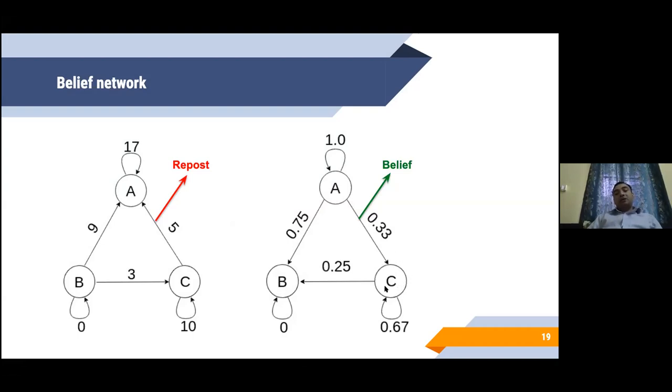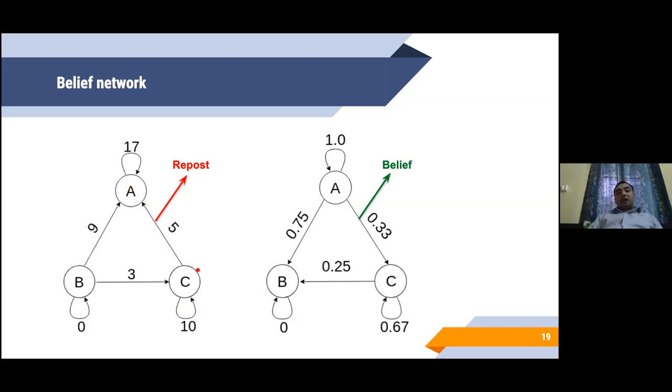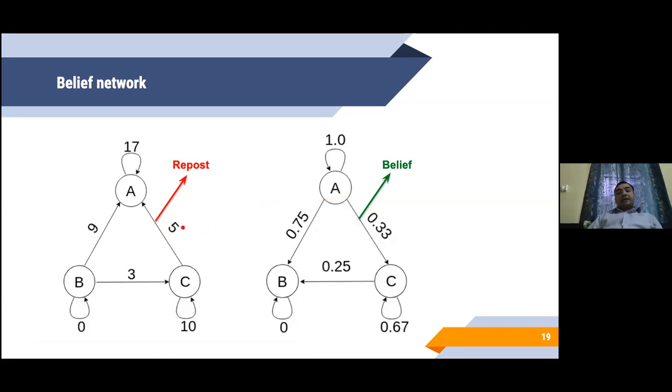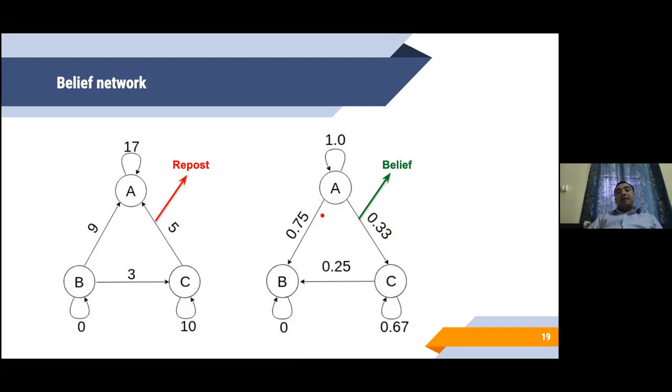From this repost network, we construct something called a belief network. Let us consider the user C. User C makes 10 posts of its own and 5 posts from user A, which we call reposts. Therefore, the belief of user C on itself is defined as 10 by 10 plus 5, that is the total number of messages posted by C, so that is 0.67. Whereas the belief of C on A is equal to 5 by 10 plus 5, which is 0.33. You see that from the repost network, we construct a belief network with edges on the opposite direction.